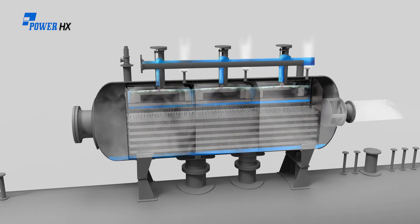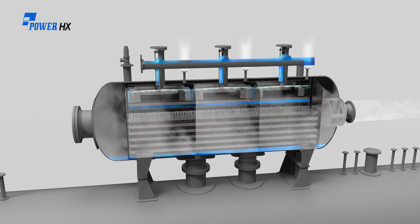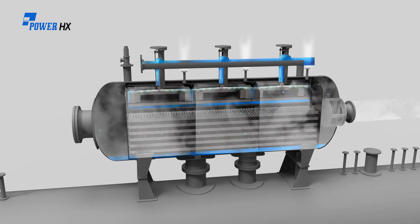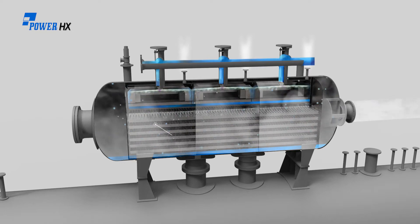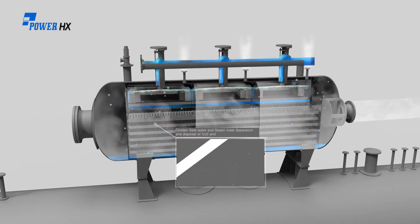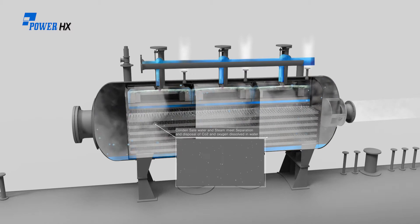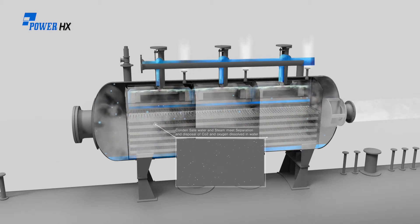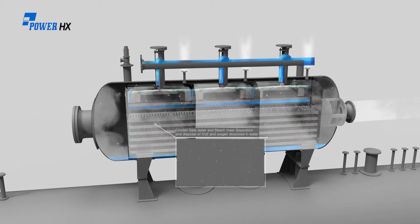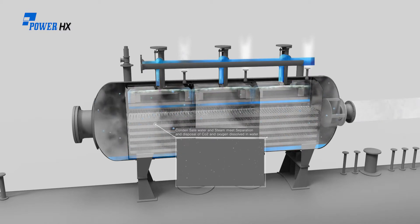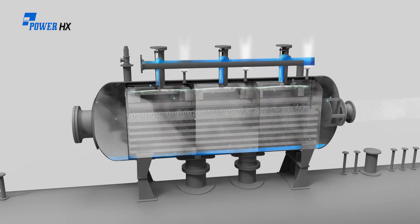In the de-aerator section, condensate water and steam meet and separate the gas state of carbon dioxide and oxygen dissolved in the water. The gas is let out through the vent nozzle. Condensate water goes through the spray valve, tub, distributor, and tray in sequence, while exchanging heat and increasing temperature until saturation temperature.